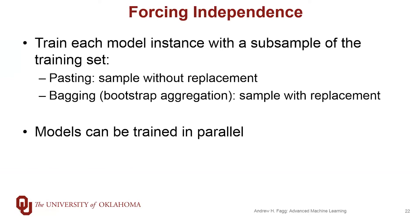The first option is to provide different training sets to the different ensemble members. There are two different types of ideas here: pasting and bagging. With pasting, what we do is sample from the full training set without replacement, which means once a sample is selected for one ensemble member, it isn't used again for any of the others. This is an extreme way of handling things.